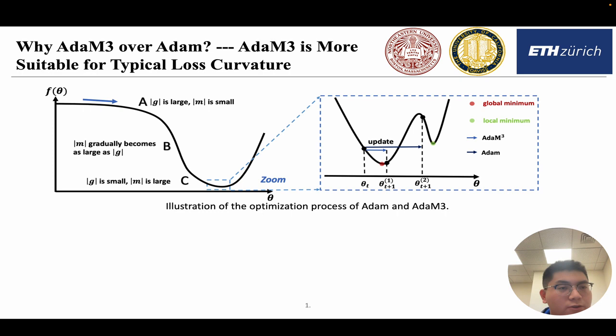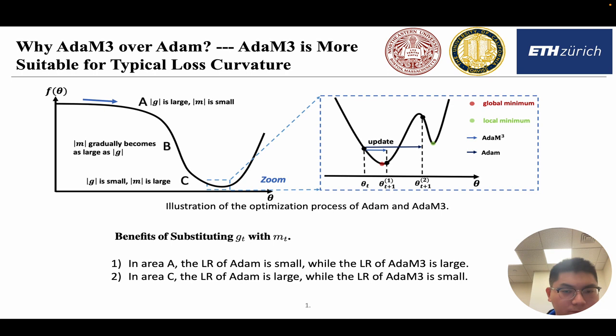This choice of the value of v_t is backed by intuitive explanations. We conclude that by such modification, AdaM3 is most suitable for typical loss curvature. Consider a general loss curvature in the picture. There are three places A, B and C. In area A, the gradient is large, the absolute value of gradient is large, but the absolute value of m is still small, considering that it's just beginning to descend. In area B, the absolute value of m gradually becomes as large as the absolute value of g. And when it approaches place C, where it's near the global minimum, the absolute value of gradient is small, but the absolute value of m is still large, since it considers the history trajectory of the gradient.